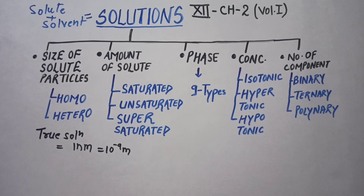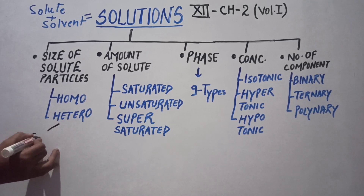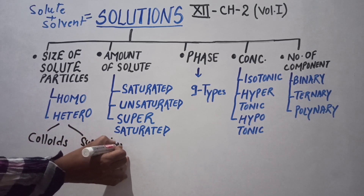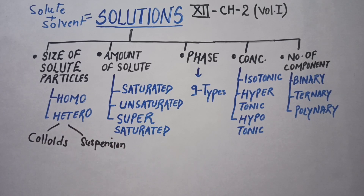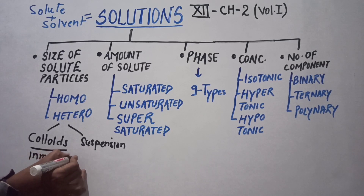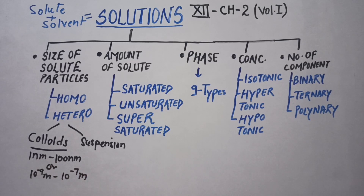The meaning of homogeneous is uniformly same. In heterogeneous solutions, we have two sub-categories: colloids and suspensions, classified according to solute size. In colloids, the solute size is between 1 nm to 100 nm, which is 10 to the power minus 9 meter to 10 to the power minus 7 meter. In suspensions, the particle size is larger than 100 nm, or larger than 10 to the power minus 7 meter.